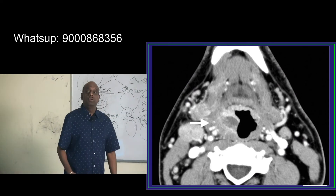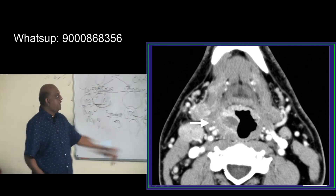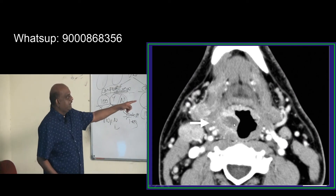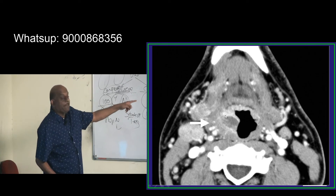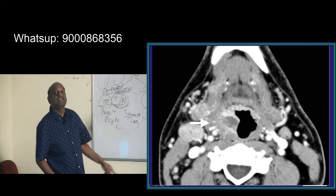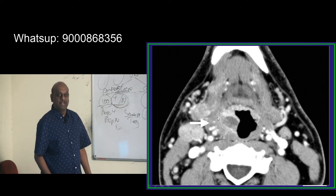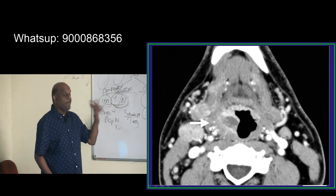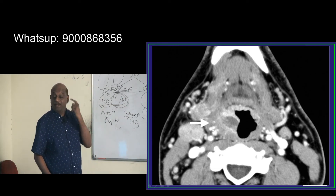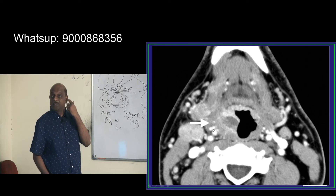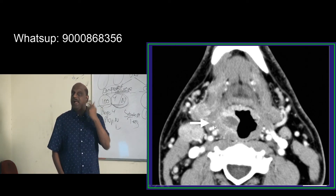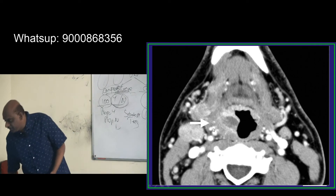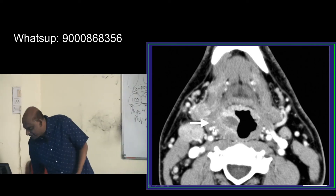So what are you seeing here? There is the peritonsillar abscess — the quinsy. This patient, through Jacobson's nerve, is having referred otalgia to the ear — that is what you need to remember.